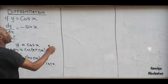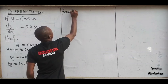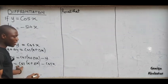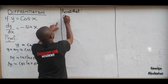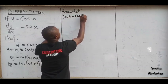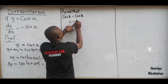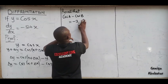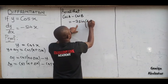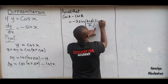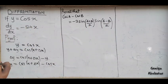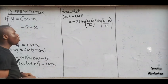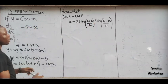Now listen. Recall the popular trig identity: if you have cos a minus cos b, the result is negative 2 sin((a + b)/2) times sin((a − b)/2). There's a popular trig identity that says cos a minus cos b equals negative 2 sin((a+b)/2) sin((a−b)/2). You need to know this — once you know this, we can actually solve this problem.